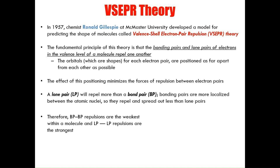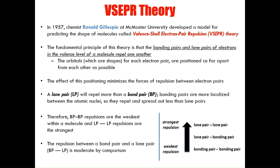Therefore, bond pair–bond pair repulsions are the weakest within a molecule, and lone pair–lone pair repulsions are the strongest, while the repulsion between a bond pair and a lone pair is moderate by comparison. This scale on the right outlines the levels of repulsion between these electron pairs, from weakest to strongest.